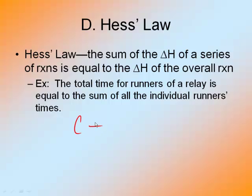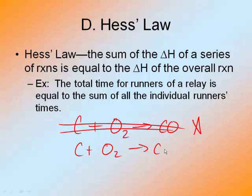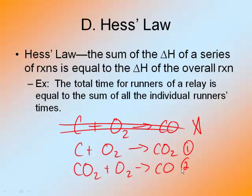I'll give you a for instance. This reaction does not occur because carbon monoxide is an unstable molecule. So if carbon reacts with oxygen, 99.9% of the time it's going to produce carbon dioxide. But what we can do is react carbon dioxide with something else and then form more carbon monoxide. So you could have something like this — step one and step two — and each step will have a delta H.